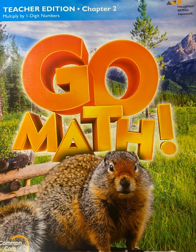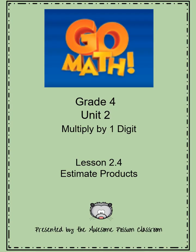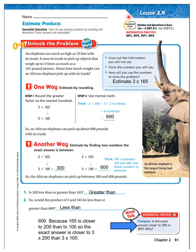Welcome back boys and girls to grade 4 GoMath. This is GoMath grade 4 unit 2, multiplied by one digit, lesson 2.4 estimate products. Our essential question is: how can you estimate products by rounding and determine if the exact answer is reasonable?